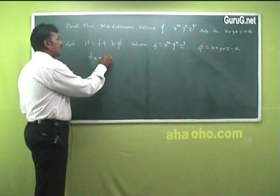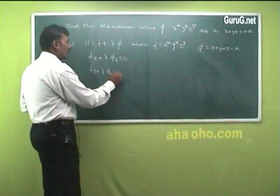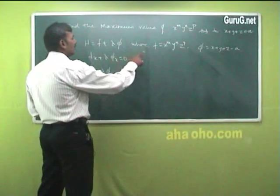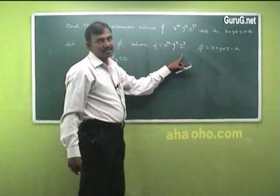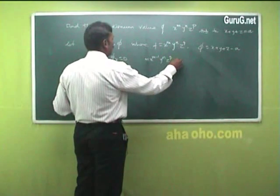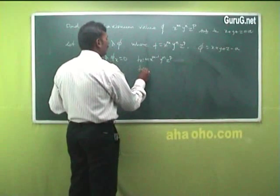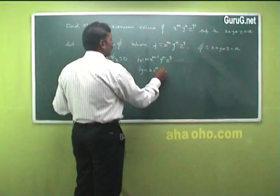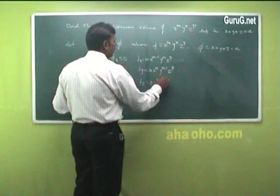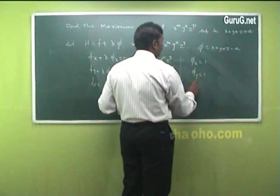Now apply the four necessary conditions: f_x + λ·φ_x = 0, f_y + λ·φ_y = 0, f_z + λ·φ_z = 0. What is f_x? Differentiating with respect to x partially, keeping y and z constant, we get m·x^(m−1)·y^n·z^p. Similarly, f_y = n·x^m·y^(n−1)·z^p, and f_z = p·x^m·y^n·z^(p−1). Also, φ_x = 1, φ_y = 1, and φ_z = 1.